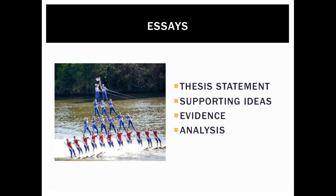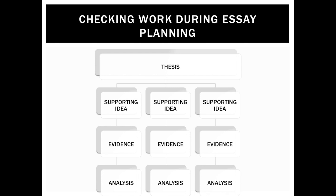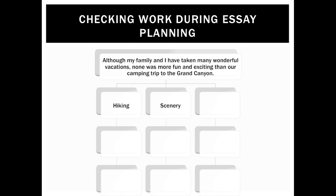We're looking at this as a support structure that holds up our biggest idea at the top, but we need everything else to be in line and supporting that idea. When we check our work during an essay, at every single step there is an opportunity to double check that we're on the right track. Starting with the thesis statement: 'Although my family and I have taken many wonderful vacations, none was more fun and exciting than our camping trip to the Grand Canyon.' I have two supporting ideas — hiking and scenery — but I can't come up with a third. That tells me right now my thesis is a bad one because I don't have enough supporting ideas to support it.